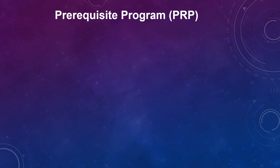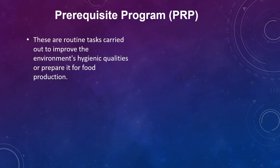Let's start with PRP, which is abbreviated as Prerequisite Program. What is PRP? These are routine tasks carried out to improve the environment's hygienic qualities or prepare it for food production. In other words, it is a general guideline to eliminate food safety hazards.